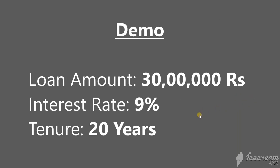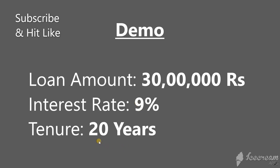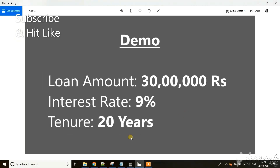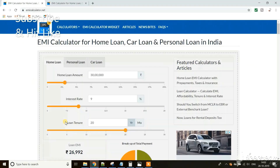For the demo purpose we will take the most typical case — the home loan. We are taking 30 lakhs as the loan amount, interest rate 9% which is the current market rate, and the typical tenure of 20 years. With this data we will see how that understanding is incorrect. I am using an EMI calculator — you can use any EMI calculator.